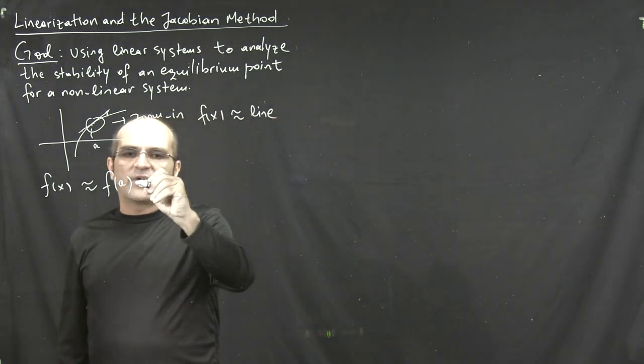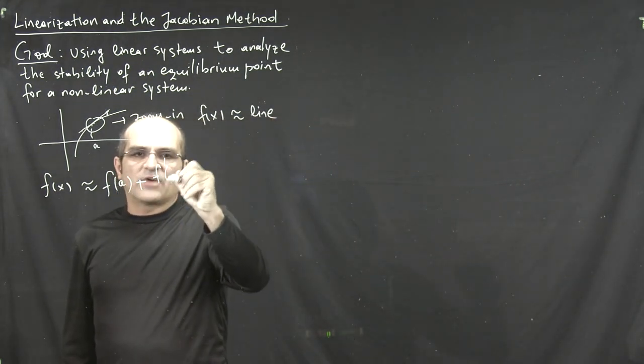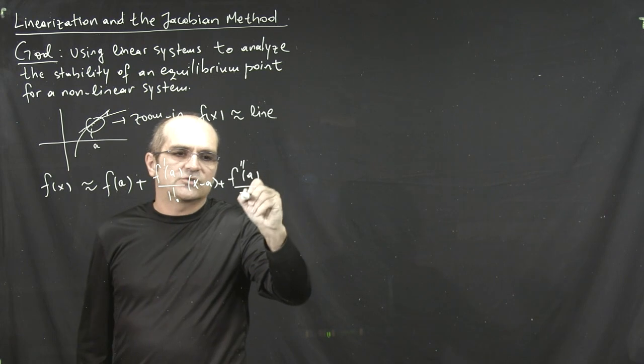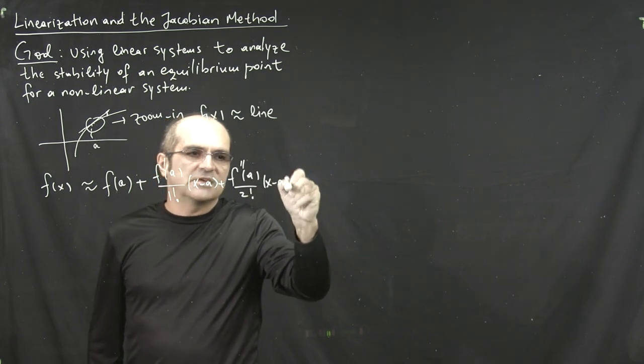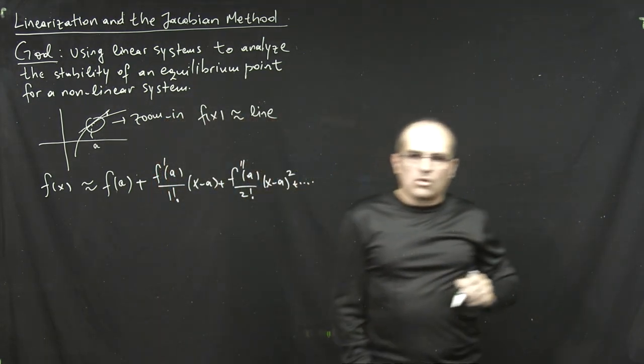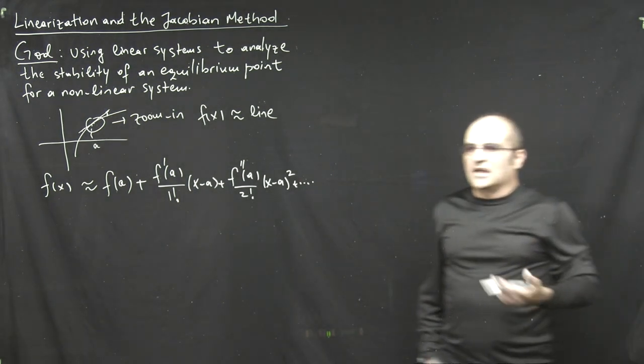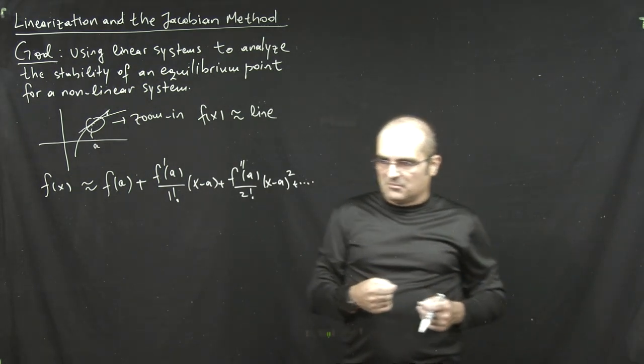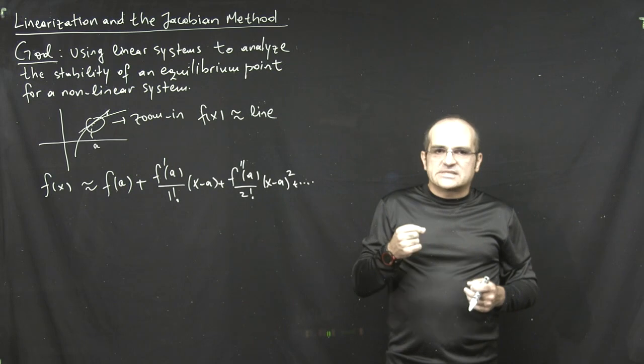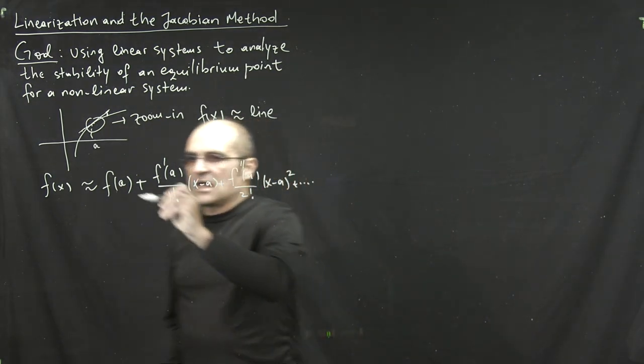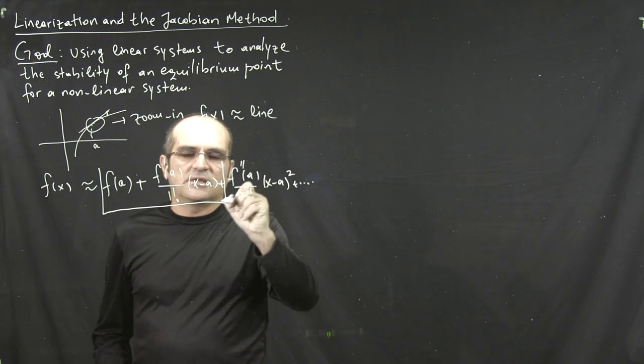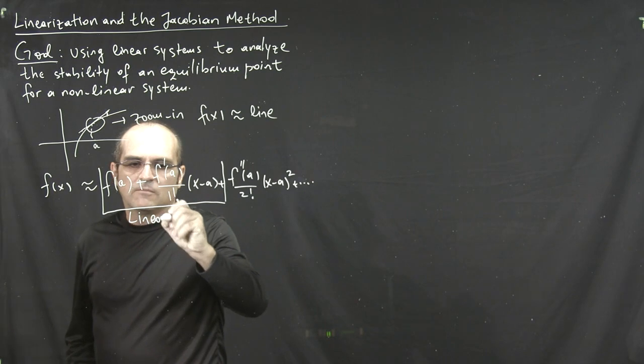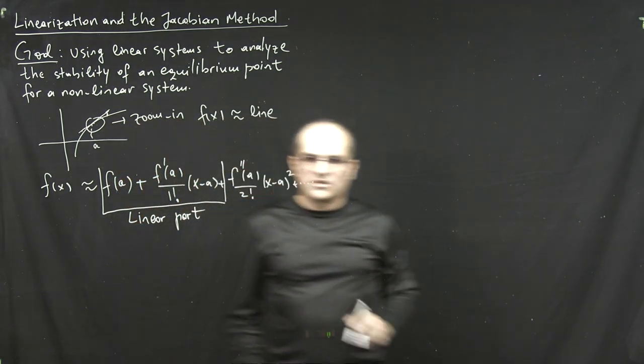f of x is approximated by f of a plus f prime of a over 1 factorial times x minus a plus f double prime of a over 2 factorial x minus a squared. And you can continue adding higher order terms until you're satisfied. The idea is that, of course, the more you add, the better the approximation is going to be. But, again, if you're happy with just the linear approximation, you typically stop with the approximating, with the approximation right here. Okay? So, you look at just the linear part of this series.